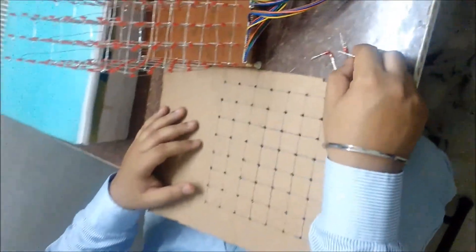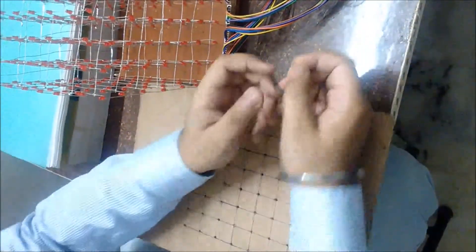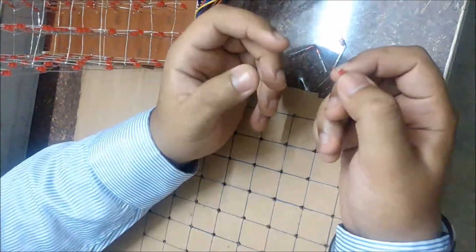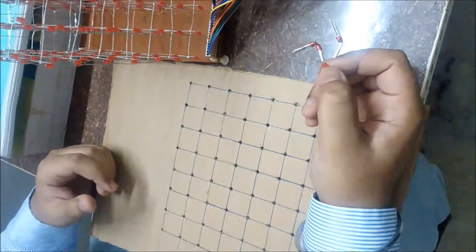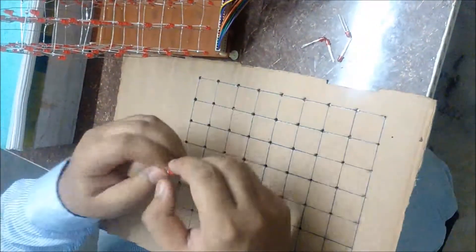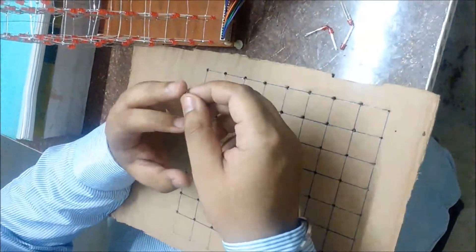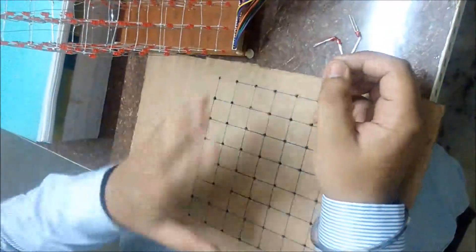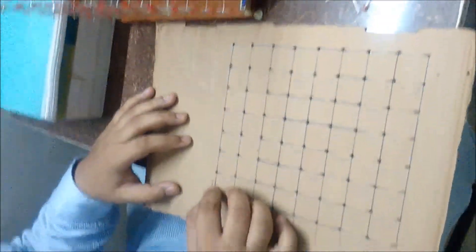Now take the LEDs and bend one leg of each LED like this. You can bend either the negative or positive leg, whatever you prefer. Do this for all the LEDs and insert them into the cardboard.